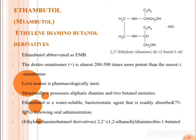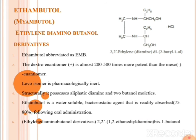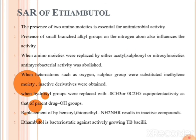For the SAR of ethambutol: the presence of two amino moieties is essential for antitubercular activity. The presence of a small branched alkyl group on the nitrogen atom also influences the activity. When the amino moieties are replaced by either acetyl, sulfonyl, or nitrosyl moieties, the antibacterial activity is abolished.